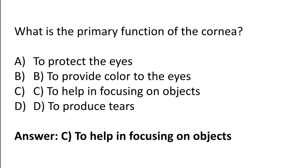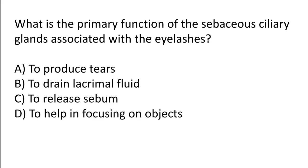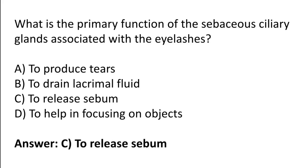What is the primary function of the sebaceous ciliary glands associated with the eyelashes? To produce tears, to drain lacrimal fluid, to release sebum, or to help in focusing on objects. The correct answer is option C — to release sebum is the primary function of the sebaceous ciliary glands associated with the eyelashes.